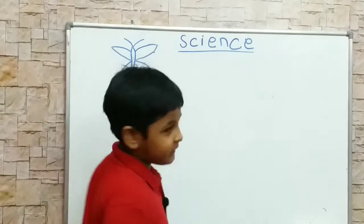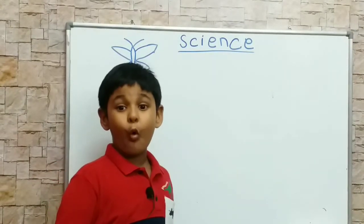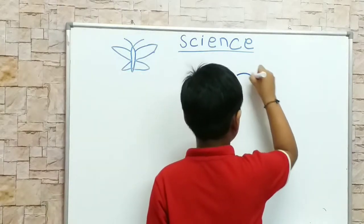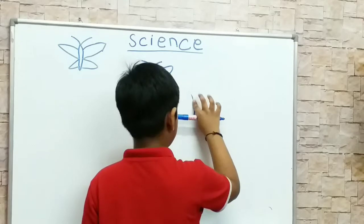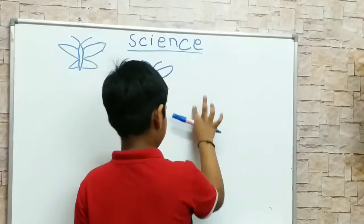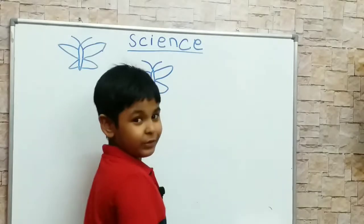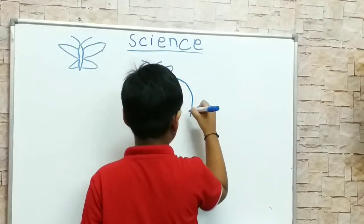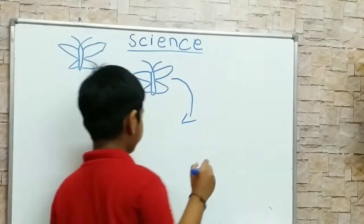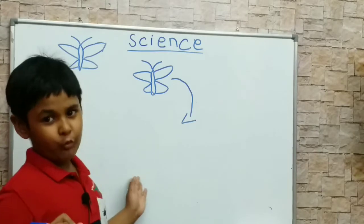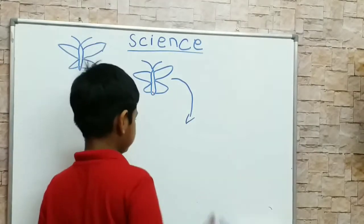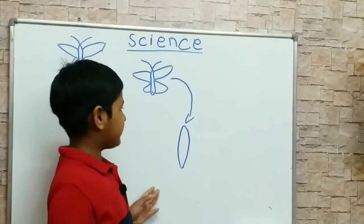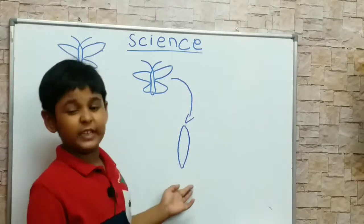Butterfly science. So after we do the arrow. Now I write arrow. There's the arrow. Now we do the leaf. So then this is a leaf — the butterfly likes eating leaves.